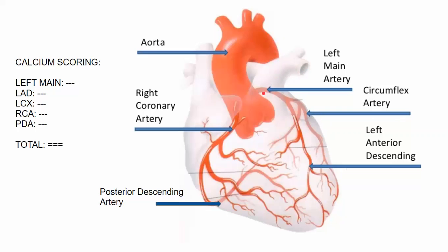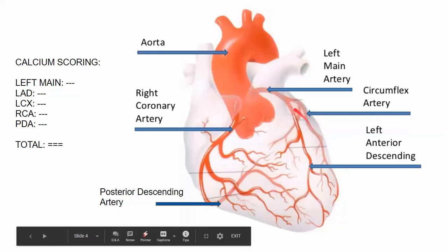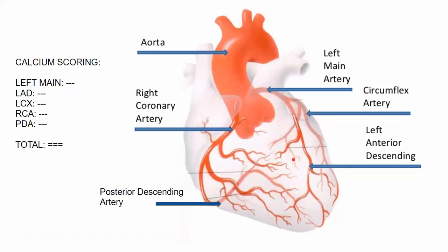The first and most important of these is the left main coronary artery — called the 'left main' on your CAC report. A blockage here is so bad that it's referred to as the widow maker, because blocking this artery pretty well shuts off blood flow to the whole left side of your heart, which is the part that pumps blood throughout the whole body.